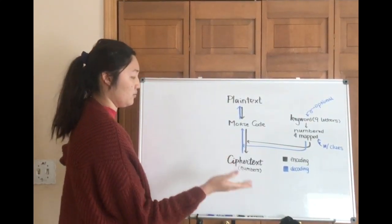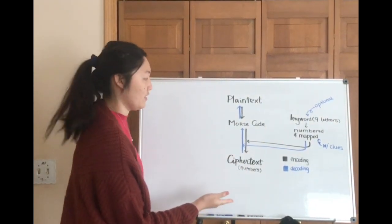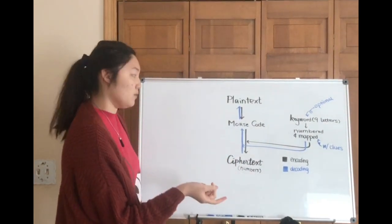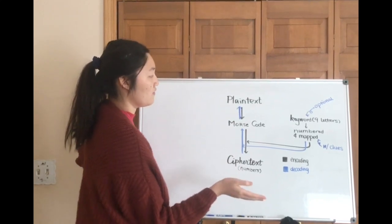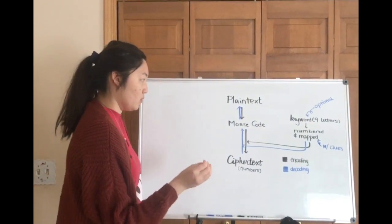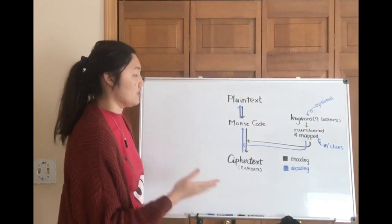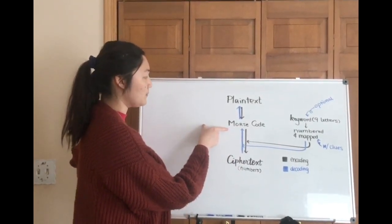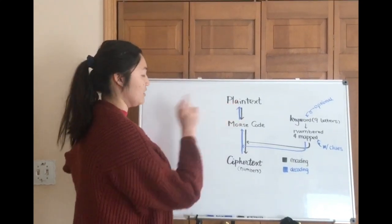You will start when you're decoding with a series of numbers as the ciphertext. And usually you are either given a keyword to help you transfer that into the Morse code or you're given clues without the keyword. So they might say what certain numbers might mean in terms of dashes and dots. So you're going to do that and transfer that into the Morse code and then using the Morse code you are going to transfer that into the plaintext.